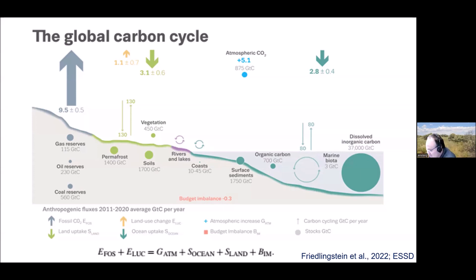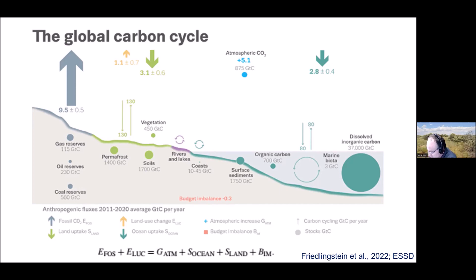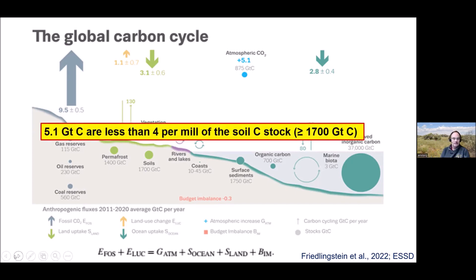The difference between the 11 emitted and 5.9 absorbed is 5.1 gigatons — exactly the amount we add too much to the atmosphere each year. The soils store about 1,700 gigatons of carbon globally. If we calculate, the 5.1 we emit too much is less than four per mil of the carbon stored in soils.